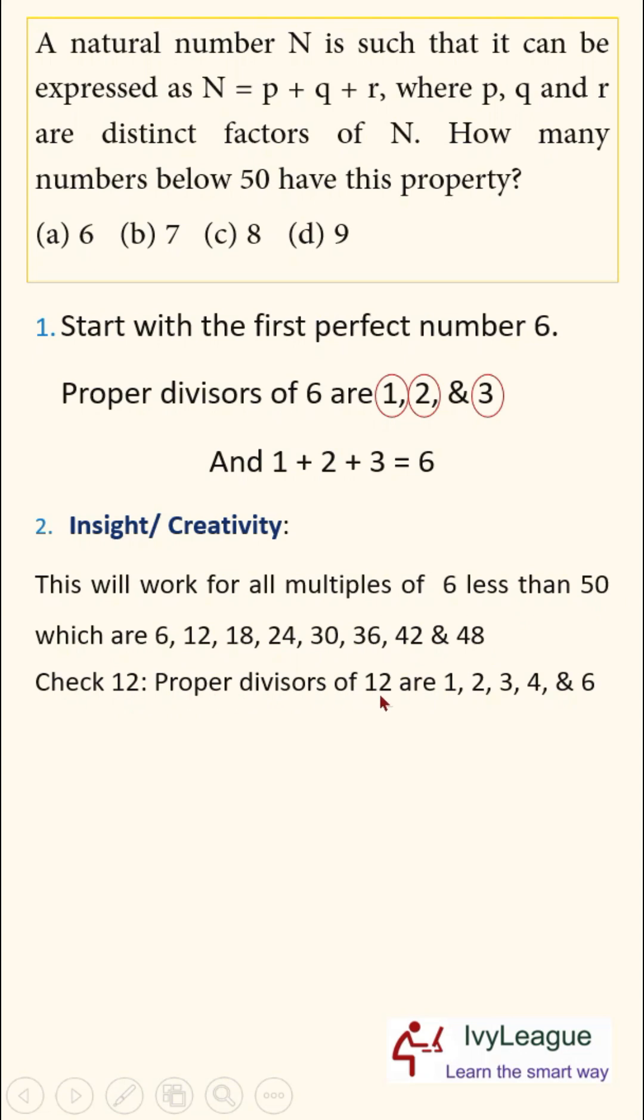If I check 12 then proper divisors of 12 are 1, 2, 3, 4 and 6 and when I add 6 plus 3 plus 2 I will end up getting the sum of 12. We really do not need to check 18, 24, 30, 36, 42 and 48. The formula will work in case of all of them.